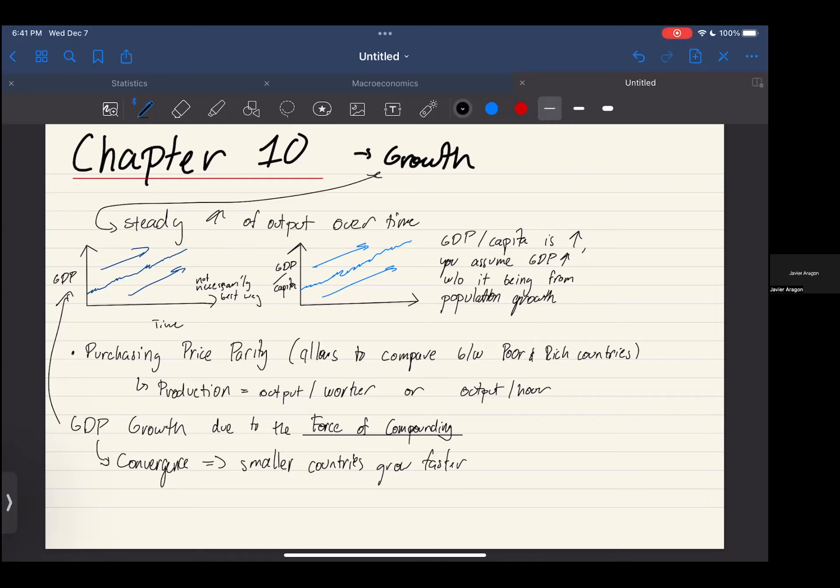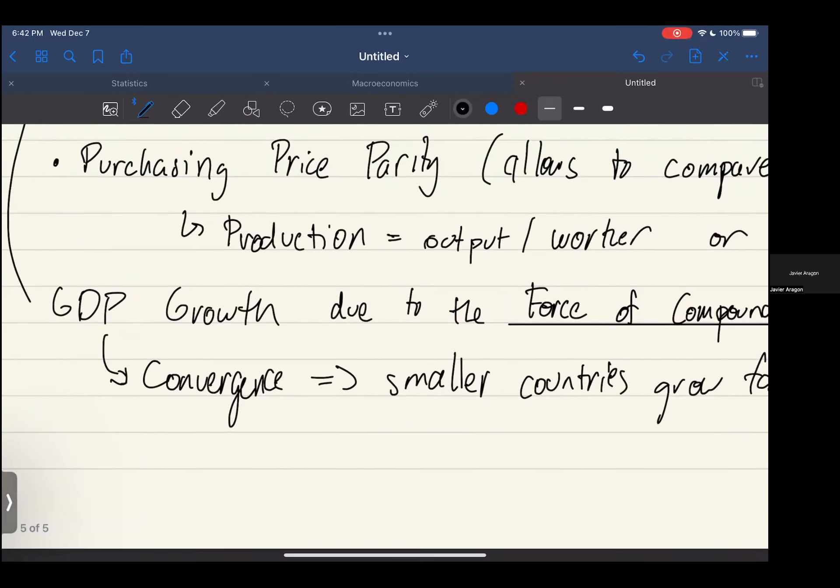So yeah, that's what you have to know about convergence and the force of compounding. This book also talks about the Easterlin paradox. By the way, this whole first part of the chapter is just jibber jabber, it's just wording, but a little bit further we will actually see formulas.